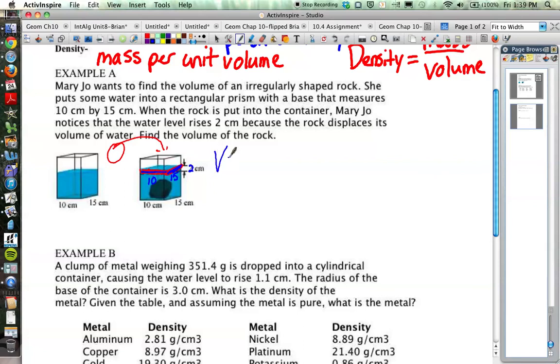The volume of that rock is found by this little slice of water prism, which is the area of the base times the height. That would be 10 by 15, and the water level rise is 2. So 10 by 15 by 2 would be 300 cubic centimeters. That is the volume of the rock.